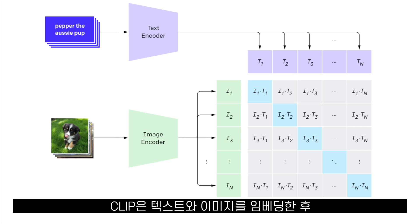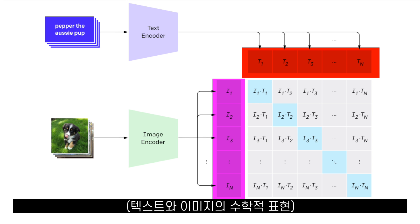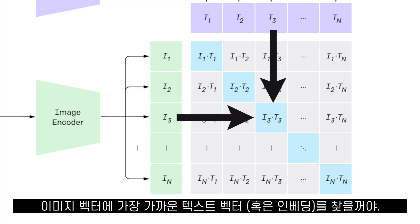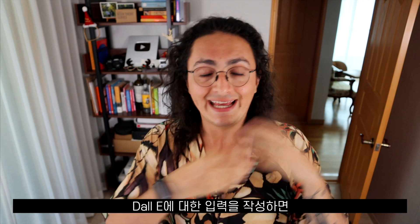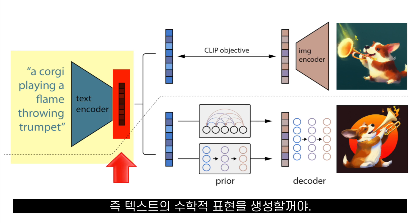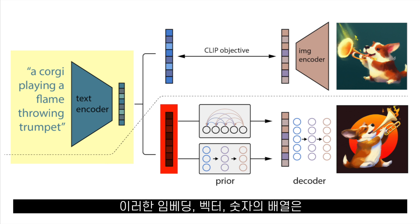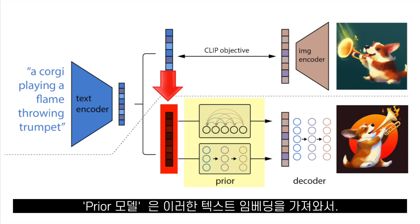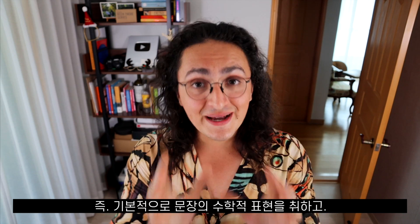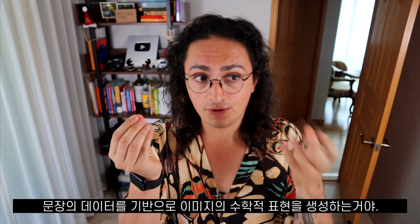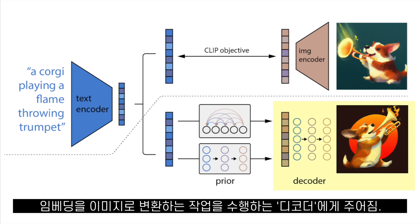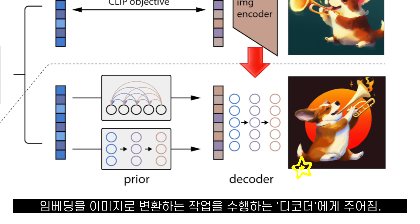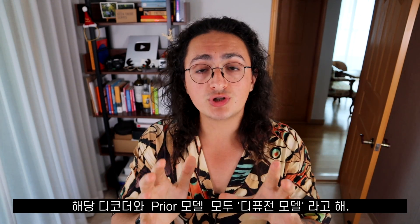The vectors that CLIP makes have way more dimensions than our example because they extract all sorts of features from the text and the images. After CLIP has the text and image embeddings — the mathematical representation of both — it will try to find the text vectors or embeddings that are closer to the image vectors or embeddings. Back to DALL-E 2: when we write an input for DALL-E, CLIP will be used to generate only the text embeddings, which is the mathematical representation of those words. Those embeddings are given to a model called the prior model, which takes these text embeddings and outputs image embeddings — taking the mathematical representation of a sentence and generating the mathematical representation of an image. Finally, the image embeddings are given to a decoder that turns image embeddings into an actual image. This decoder and also the prior model are both something called diffusion models.